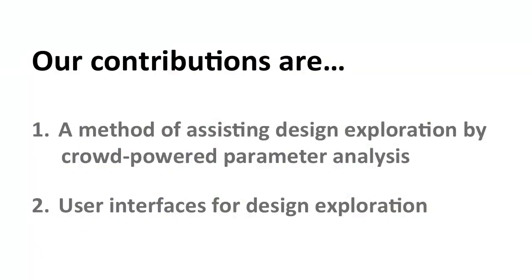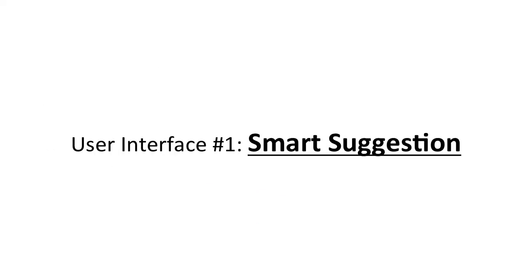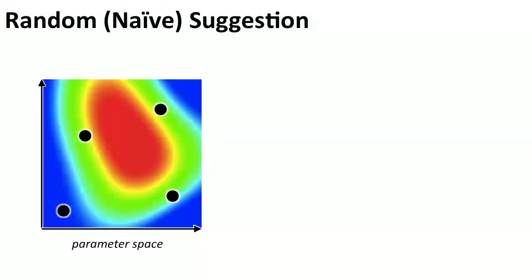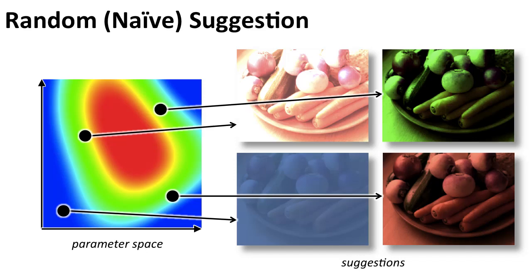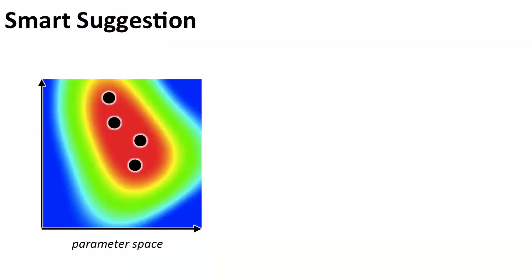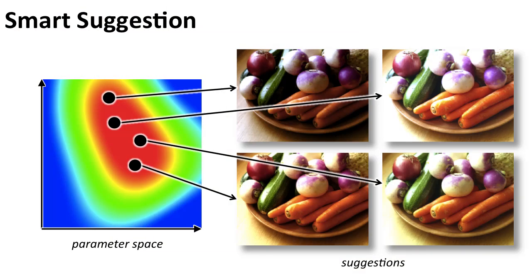Our main contributions consist of two parts: a method of assisting design exploration by analyzing parameter space using on-demand crowdsourcing, and two user interfaces for design exploration enabled by the analysis. The first interface is called Smart Suggestion. Unlike random suggestions where most suggestions are useless, Smart Suggestion provides designs that have relatively good scores, giving users a reasonable starting point for further exploration.